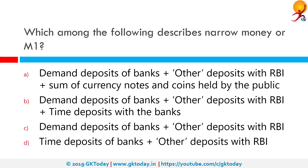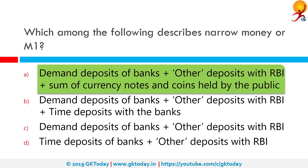Which among the following describes narrow money or M1? The correct answer is demand deposits of banks, other deposits of RBI, and currency notes and coins held by the public. Narrow money includes both physical money such as coins and currencies, and any deposits and other liquid assets held by the central bank, which in the case of India is RBI.